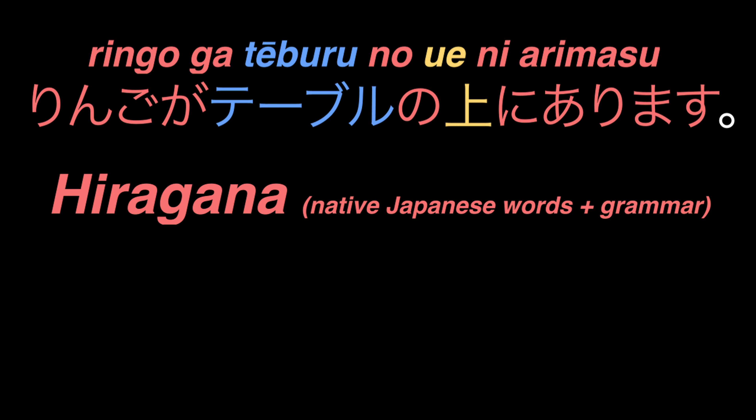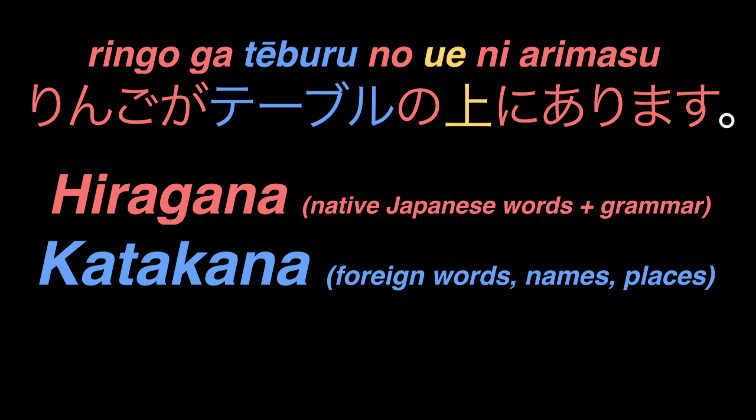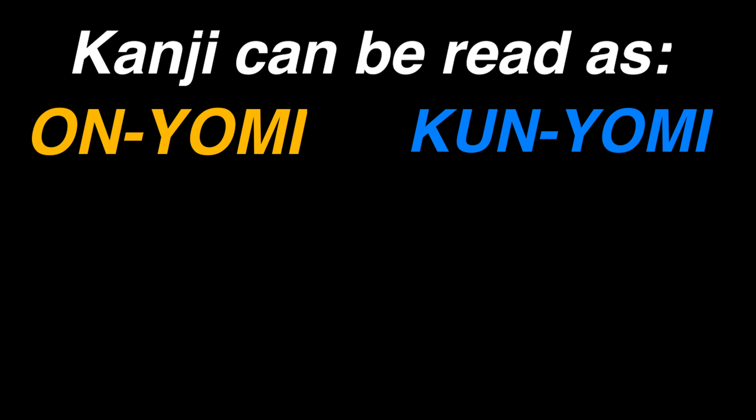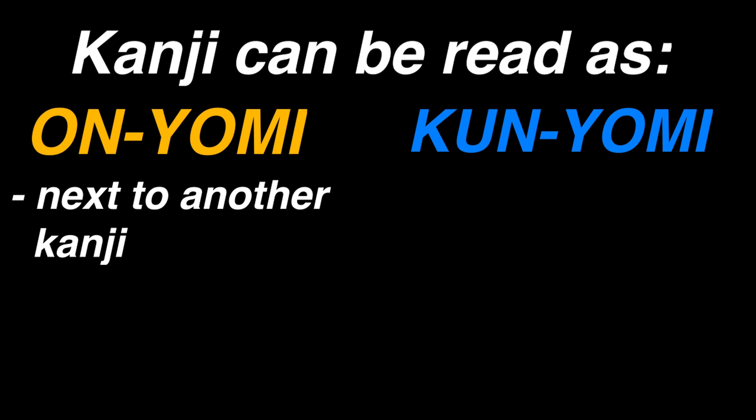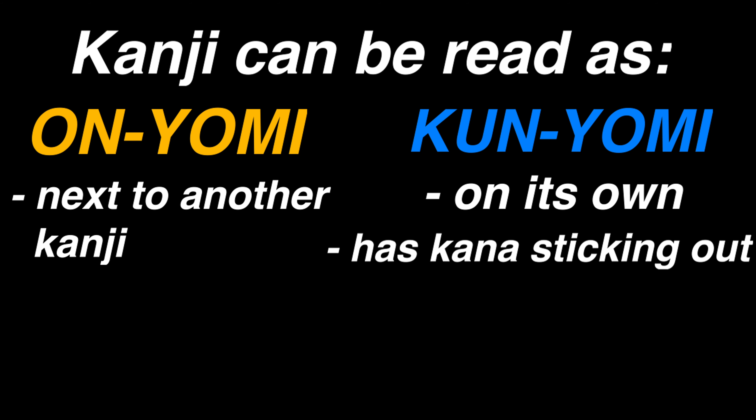Hiragana is used to spell native Japanese words, and katakana is used for foreign words, for the most part. Kanji can have two interpretations: the native Japanese kunyomi reading, or the Chinese onyomi reading. The kanji would be read as its onyomi reading if it's in a compound with another character, and it's usually read as kunyomi if it's just a single kanji, or if it's written with kana sticking out of it.